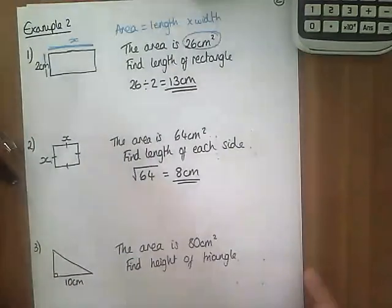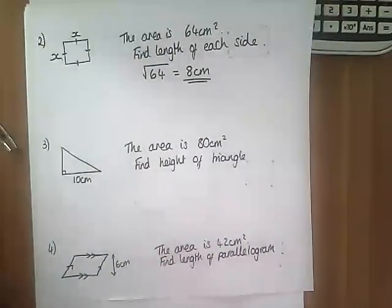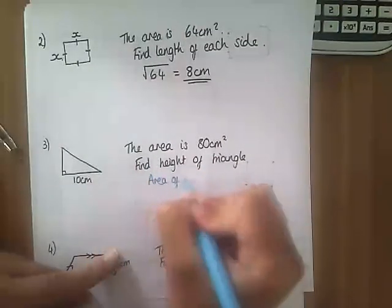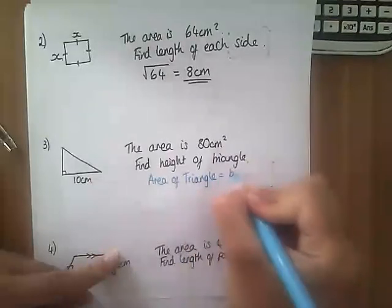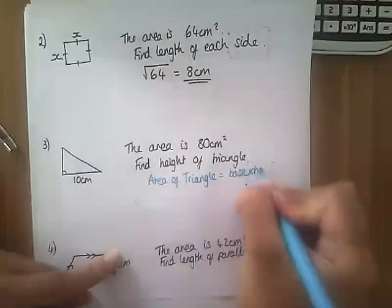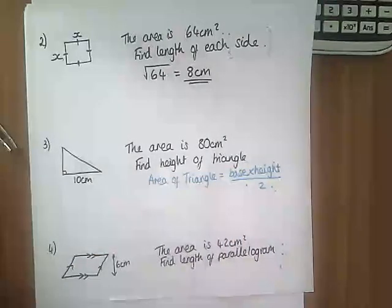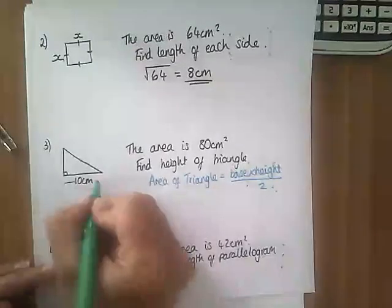Question 3 is slightly trickier. We've got a triangle here. The area of a triangle is base times height divided by 2. What we're saying is I did the base which is 10, times something, divided it by 2 and I got 80. I've got to work backwards.